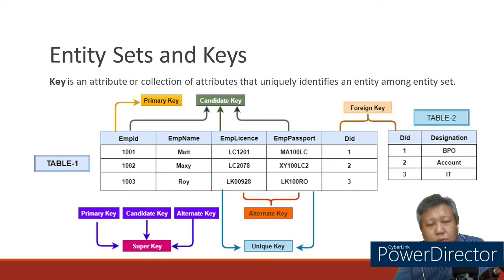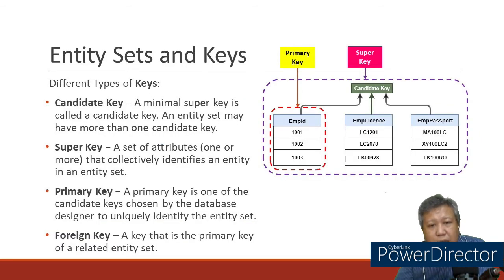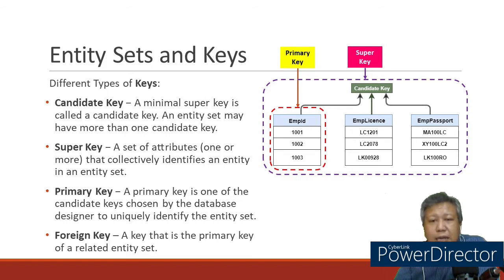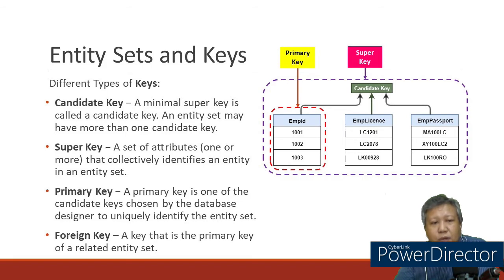To summarize the different types of keys: a super key is a combination of candidate keys used as the primary key. A candidate key is one we can choose as primary key, and if not chosen, it becomes an alternate key. When the primary key of another table is imported into the current table, it is called a foreign key. That concludes our discussion on entity sets and keys in the Peter Chen diagram. Next we will discuss relationships.